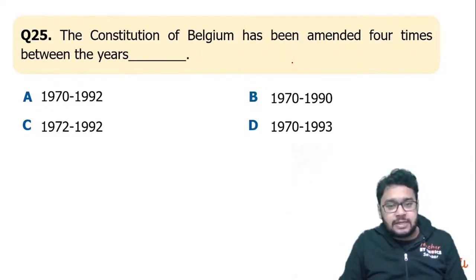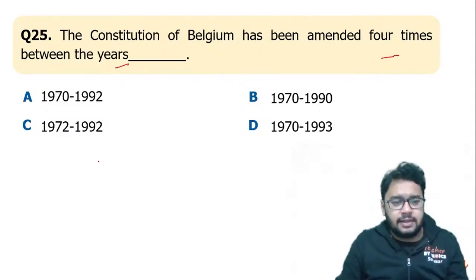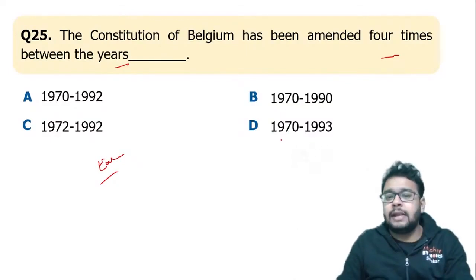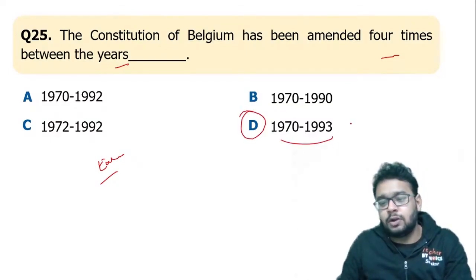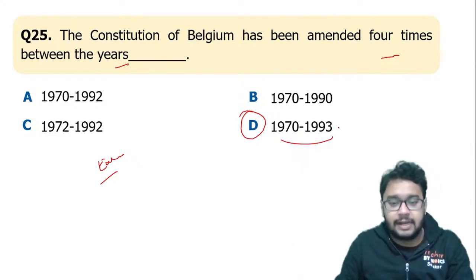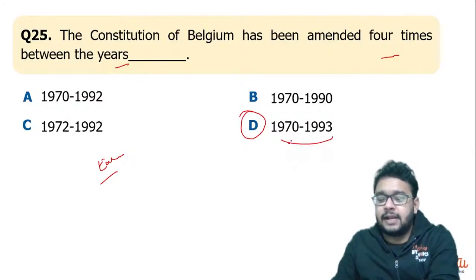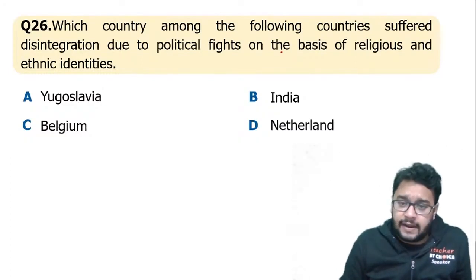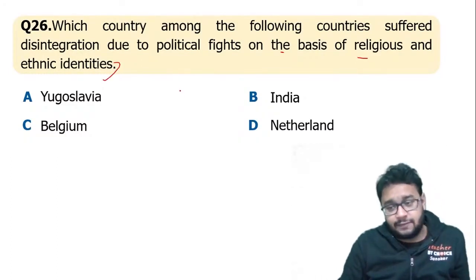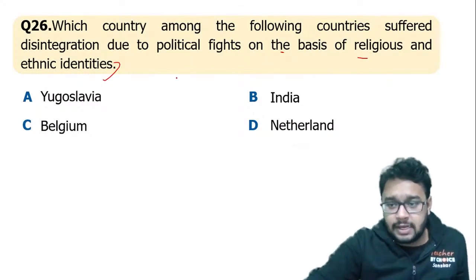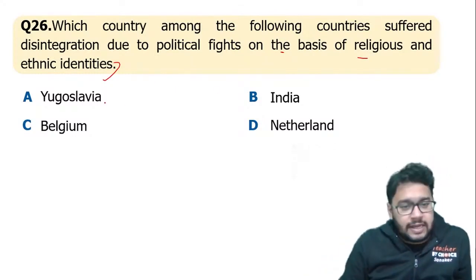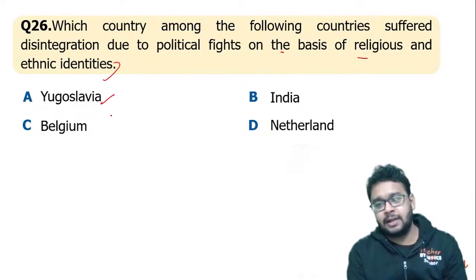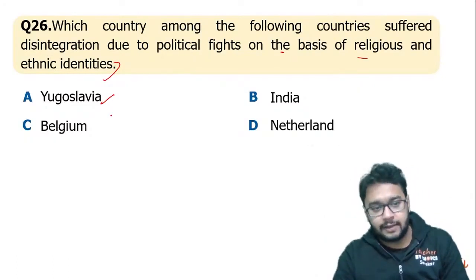The Constitution of Belgium has been amended four times between certain years — from the Power Sharing chapter. The answer is between 1970 to 1993, option D. Next, which country suffered disintegration due to political fights based on religious and ethnic identities? From the Gender, Religion, and Caste chapter, the answer is Yugoslavia — it was disintegrated because of internal conflicts, not India or Belgium.